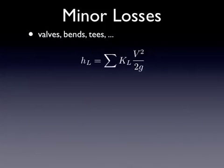So valves, bends, tees, things like that, and we're going to use an equation that's kind of like the Darcy-Weisbach equation. It's got the v squared over 2g in it, but then it's got the summation of loss coefficients. So you may have multiple loss coefficients.